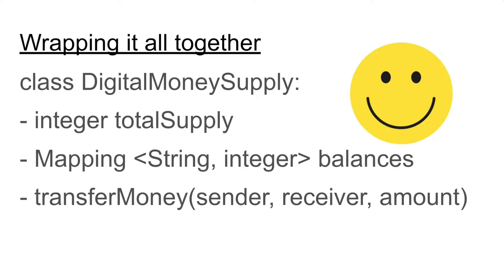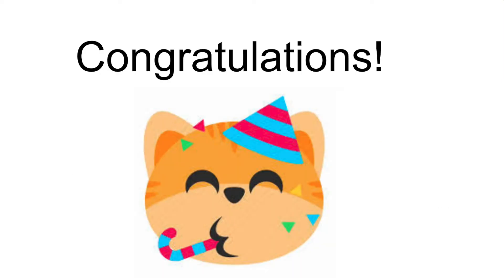Wrapping it all together, we have our class called Digital Money Supply. We have total supply, keeping track of the total money in the system. We have balances, which keep track of how much each person has. And we also have transferMoney, which will allow a sender to send an arbitrary amount of money to a receiver. If you made it this far, then congratulations — you're already halfway there to understanding the ERC-20 token contract.